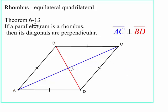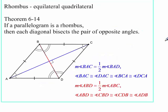So first thing, rhombus. Rhombus is an equilateral quadrilateral where all four sides are congruent to each other. And it has some more properties than that. Theorem 6-13 is going to state that if a parallelogram is a rhombus, then its diagonals are perpendicular. So I wrote that BD is perpendicular to AC.